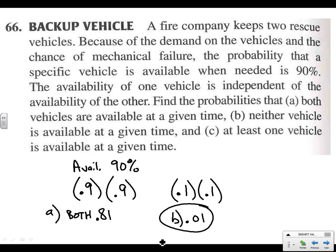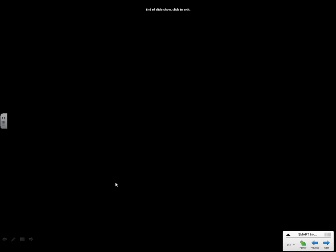So finally, what is the chance that at least one of them is going to be available? At least one of them means not both unavailable. The opposite of that. So that's 1 minus 0.01, which gives us a 99% chance that at least one of them would be available. Alright, that will do it for probability. We will see you next class.